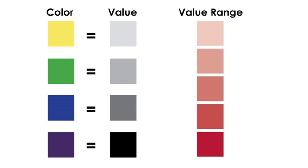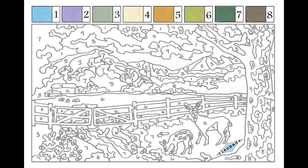If yellow is a two and red's a five, guess what green is? It's also a five. Which would mean blue would probably be a seven, and purple would be like an eight or a nine. You've got to think of it as numbers. Where do you think the whole concept of paint-by-numbers came from?